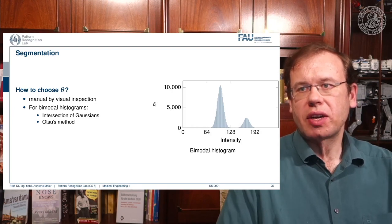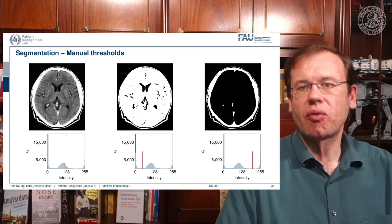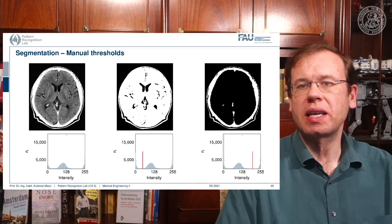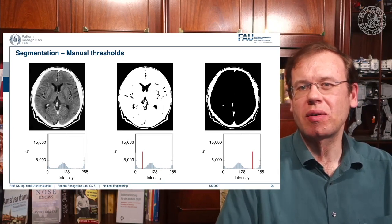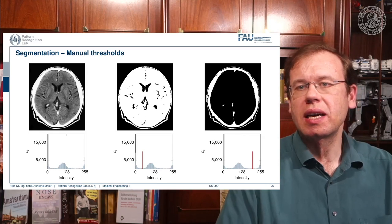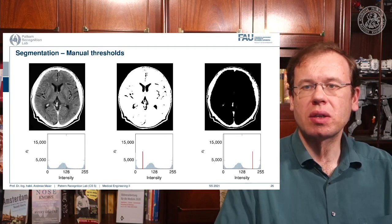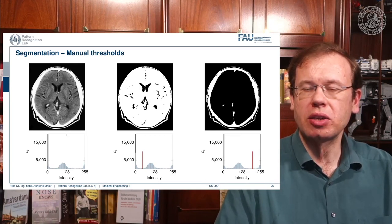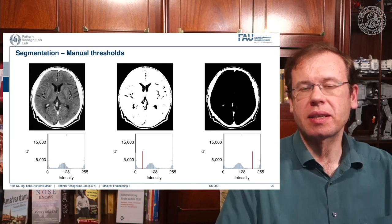If we want to pick this threshold, then we essentially end up with different images. Here you can see examples for the original input image on the left hand side, and then we see the histogram on the bottom. And you see here that we essentially have three Gaussians. So we have one for the background that is all close to zero, then we have one for essentially the brain tissue that is the peak in the center, and then we have the skull and bony tissues on the right hand side. Now if I pick the threshold between the two peaks on the left, you can see that we are essentially assigning the brain tissue and the skull tissue to our segmentation mask. If I pick the threshold higher, then I'm segmenting essentially only the skull.